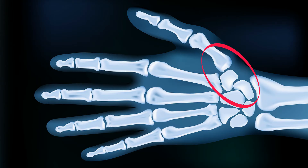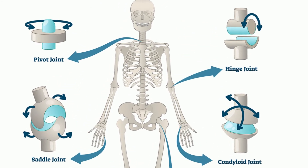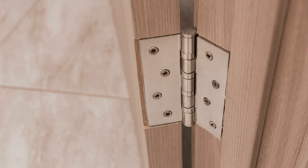Hinge joints can be found at your knees and your elbows, and they allow for back and forth movement. Think of a hinge on your door.